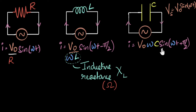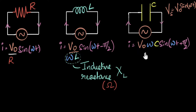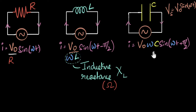Now let's do the same thing for the capacitor. What is the opposition provided by the capacitor — what will be the expression for capacitive reactance? You might notice that in the capacitor's current equation there's nothing in the denominator, so how can we identify the opposition? Remember that we have omega and C in the numerator along with V₀, and you can always take something from the numerator and put it in the denominator. It's just a mathematical trick.